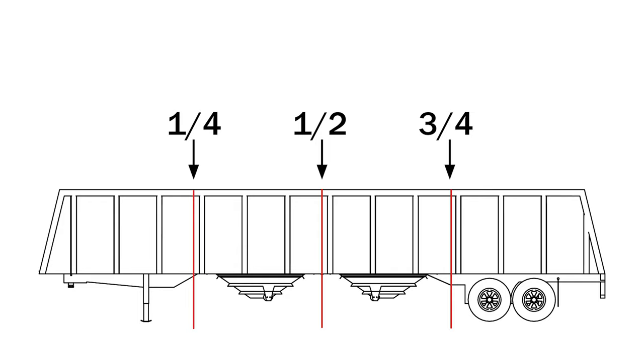If two cords, mark box on both sides approximately a quarter and three-quarter from front.